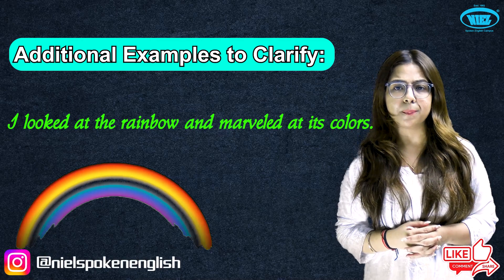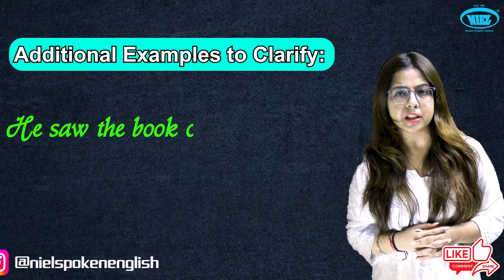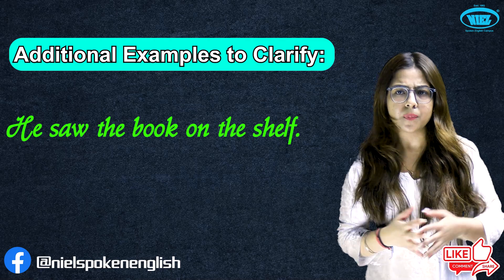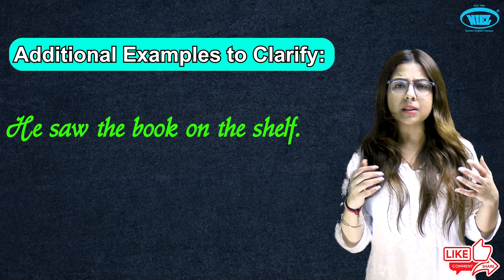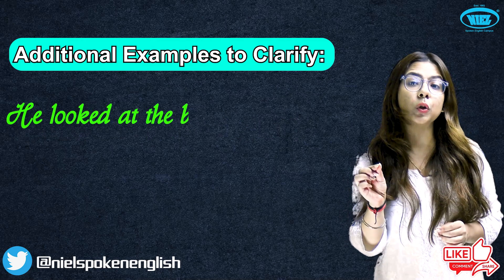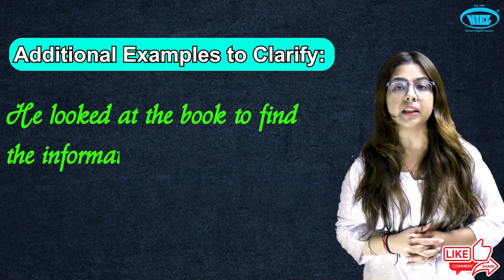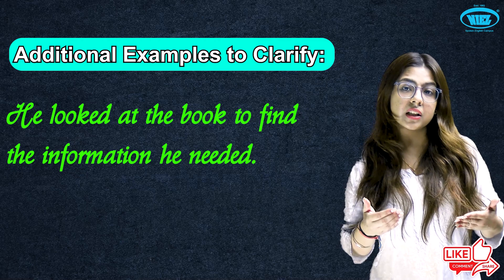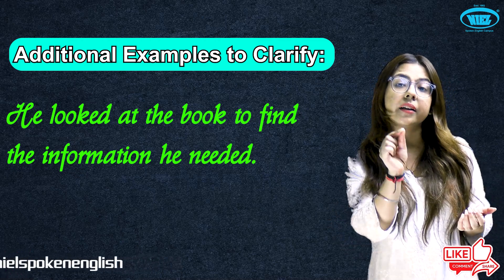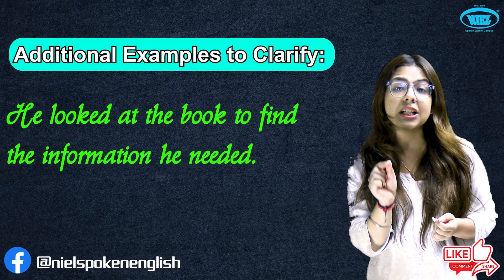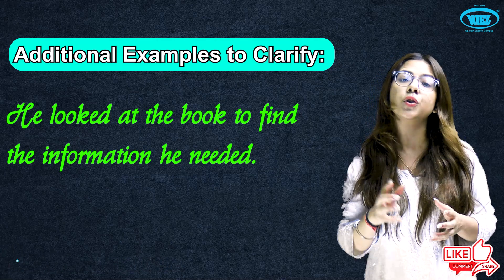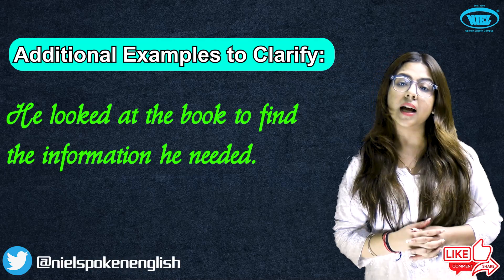Let's see another example. He saw the book on the shelf — book padi thi shelf par and he saw it; he noticed the book without any effort. But he looked at the book to find the information he needed — usko jo information chahiye thi, usne book kholi, uske liye book dekhi; he intentionally directed his attention to the book to search for the information he required.